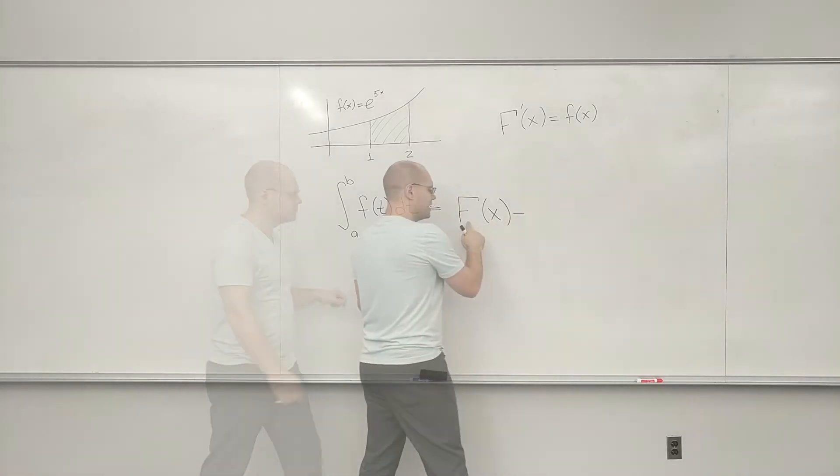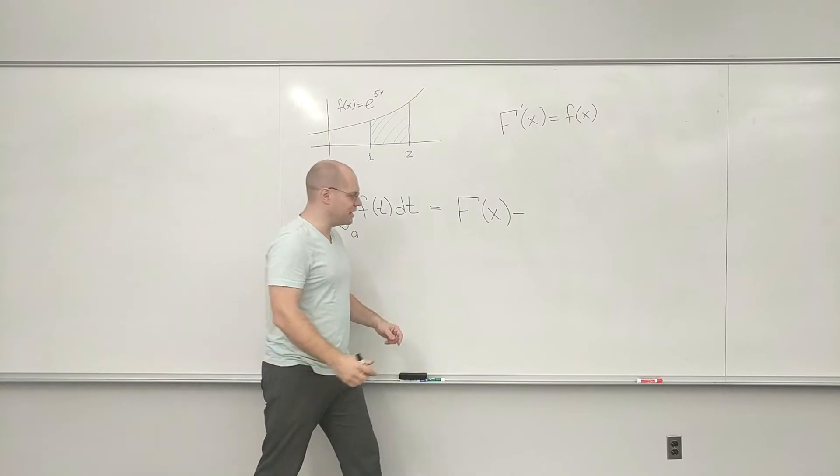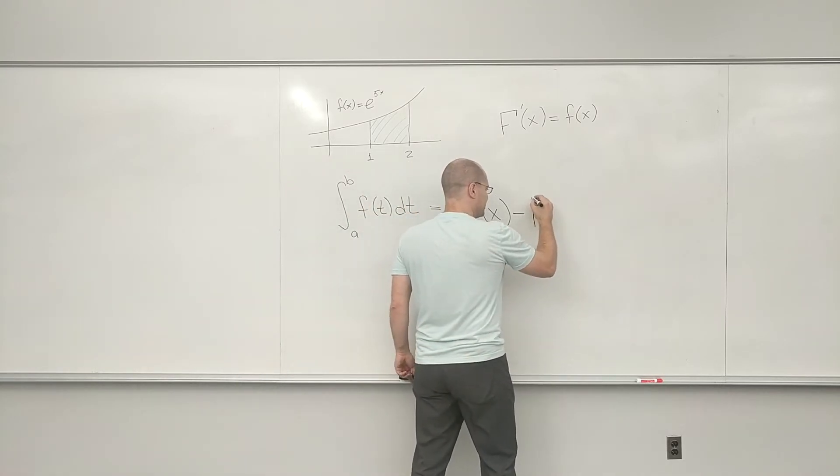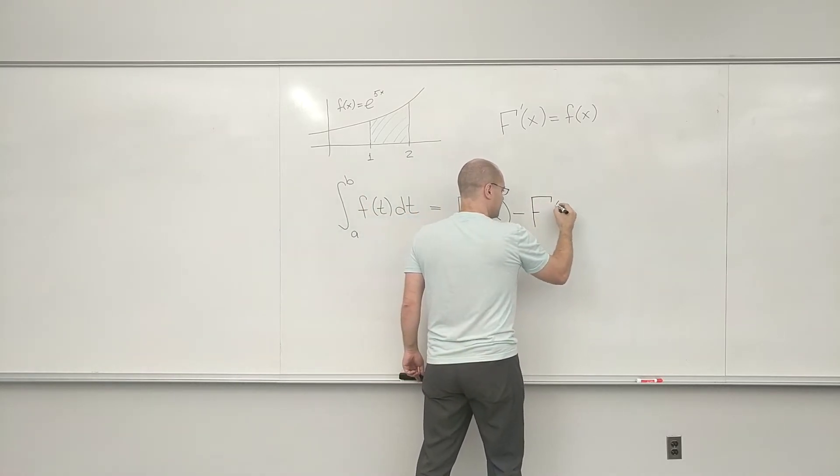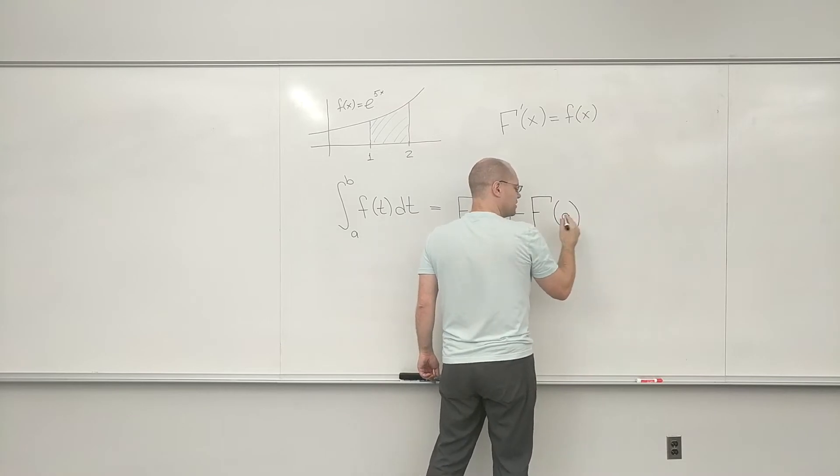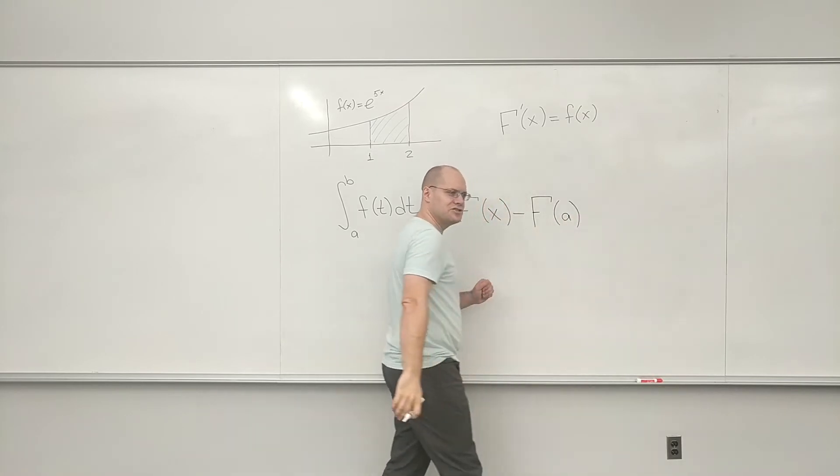we have to choose the one so that at x equals A, the value will be zero. Whatever F we chose here, we have to subtract f of A. That's what we've already done three times. I specifically chose three functions where each one required an adjustment like that.